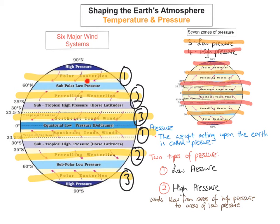The three wind systems in the northern hemisphere are: the northeast polar winds, also called the polar easterlies; the prevailing westerlies; and the northeast trade winds. In the southern hemisphere, we have the southeast trade winds, the prevailing westerlies, and the polar easterlies.